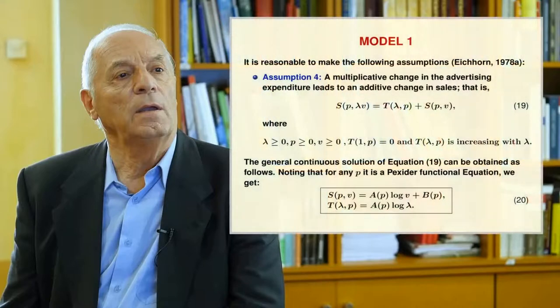We start with Model 1, making assumptions suggested by Eichhorn in 1978. Assumption 4: a multiplicative change in advertising expenditure leads to an additive change in sales, that is, functional equation 19 holds. The general continuous solution of equation 19 can be obtained by noting that for any P it is a Pexider functional equation, yielding the functions in expression 20.